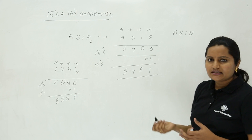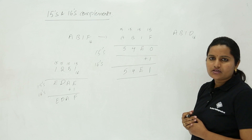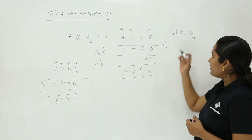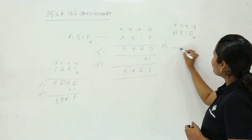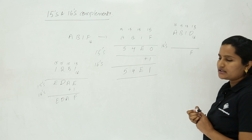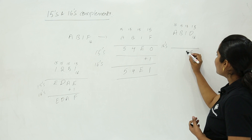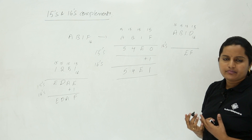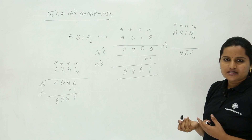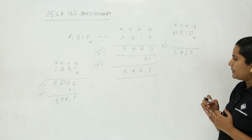In the same way we can find the complement of any number. For example, take the hexadecimal number AB10. Now we need to find out the 15's and 16's complement. To get the 15's complement, subtract each and every digit from 15. So 15 minus 0 is 15, which means F. Then 15 minus 1 is 14, equivalent to E. Next, 15 minus B: B means 11, so 15 minus 11 is 4. And 15 minus A: A means 10, so 15 minus 10 is 5. This gives the 15's complement as 54EF.